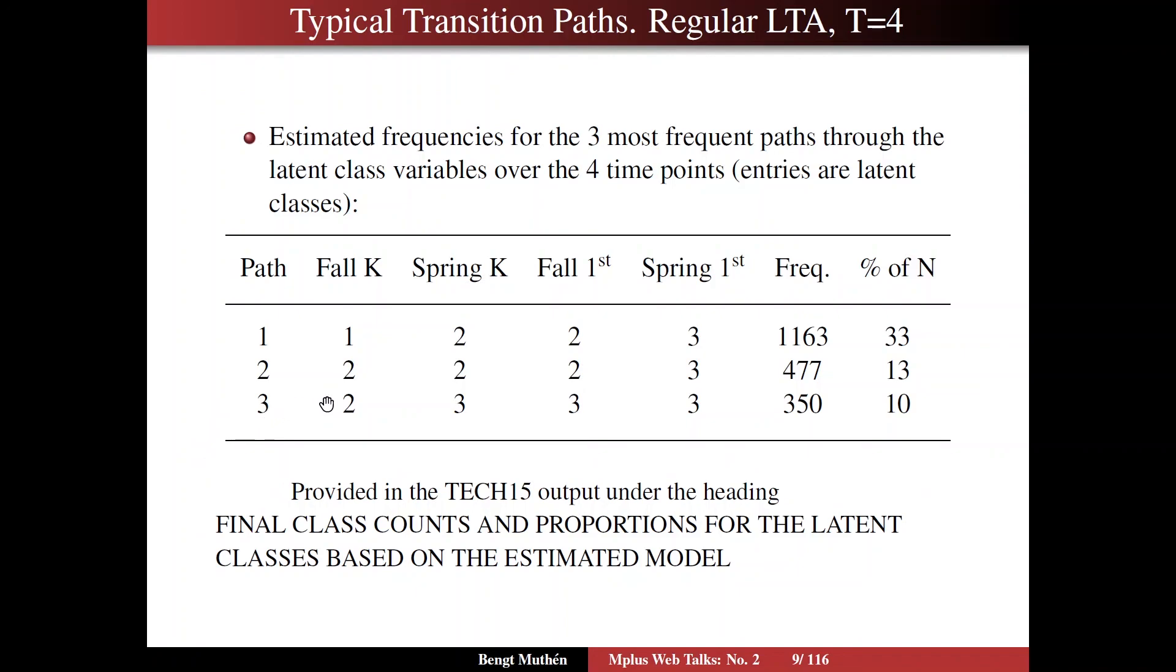The third most likely path is starting at class two and already in kindergarten moving up to class three, staying in class three then throughout first grade. 10% of the kids do that, according to regular LTA. This kind of information is interesting and is provided in the TECH15 output under the heading Final Class Counts and Proportions for the Latent Classes based on the estimated model.